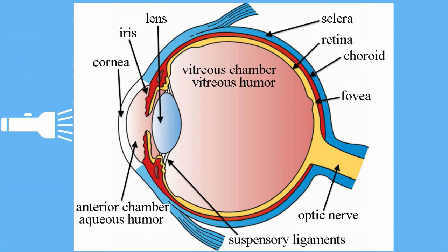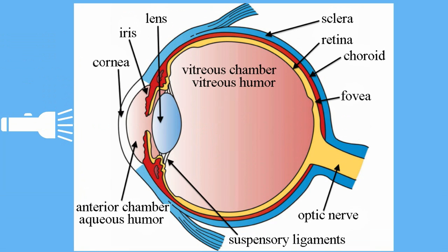As light passes through the pupil, it next will strike the lens, which is a structure that focuses light. Because of the way in which the lens of the eye bends the light, the image it produces is upside down and reversed. Also, muscles that are attached to the lens adjust its shape, which allows the light to be clear and in focus.